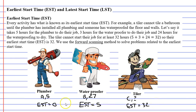So why do we need to know the earliest start time for each tradie? Well, if a builder was booking all of these tradespeople to come in, they need to know the earliest start time to make sure that they come at an appropriate time. You don't want to book the tiler in when the waterproofing membrane hasn't dried yet — otherwise, they can't start their job and they're going to charge you for doing nothing.